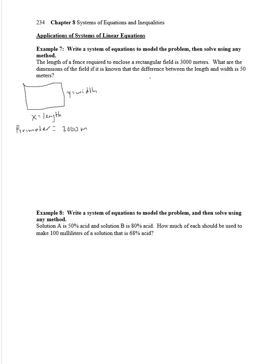And we also know that the difference between the length and the width is 50 meters. So that tells us that x minus y equals 50. And since we know the perimeter, and we know the formula for perimeter, 2 times the length plus 2 times the width equals 3,000. And now we can solve.